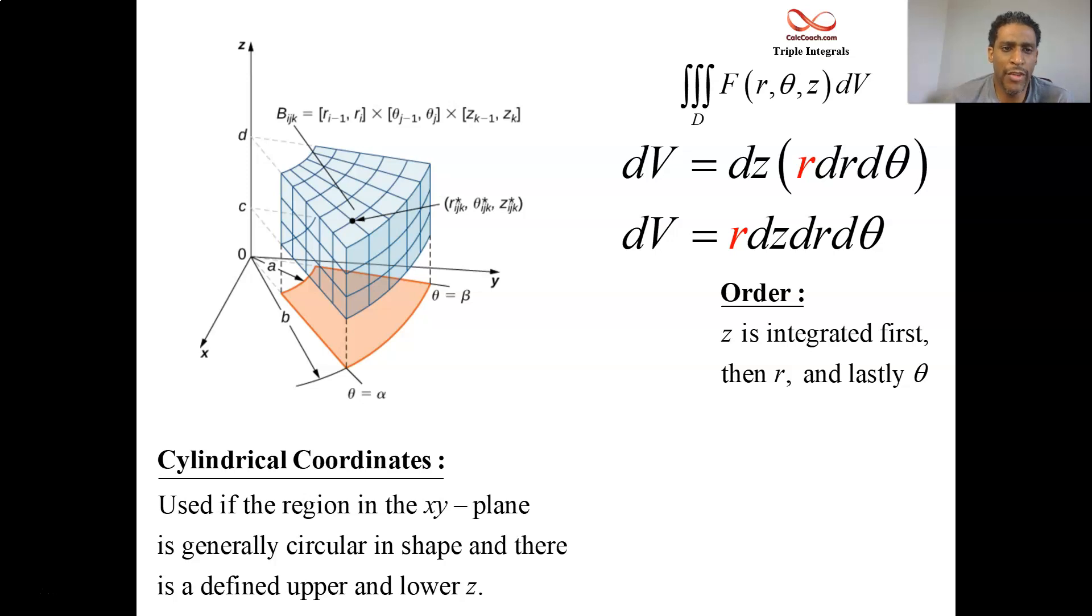Now, when do you know to use cylindrical as opposed to Cartesian? Well, whenever you have a region, a three-dimensional region that you're integrating over that has an upper and lower defined z value that doesn't change throughout the shape.